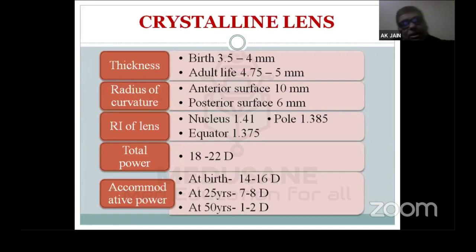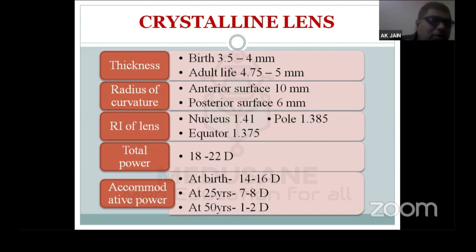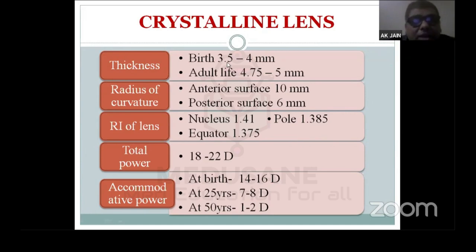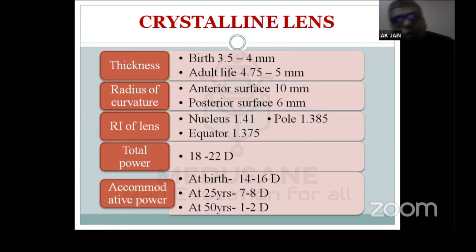The crystalline lens is the next component — another refracting surface. The cornea provides nearly two-thirds of the total refractive power, and the remaining one-third lies with the crystalline lens. The corneal thickness is around 540–550 micrometers (not millimeters). The crystalline lens thickness at birth is 3.5 to 4.5 mm, increasing gradually to 4.75–5 mm in adulthood.